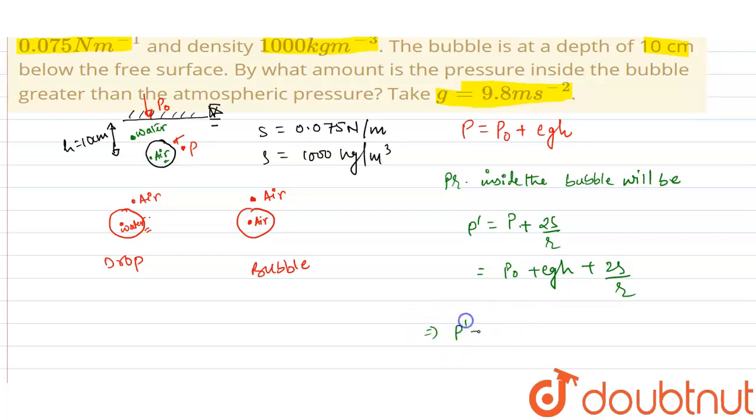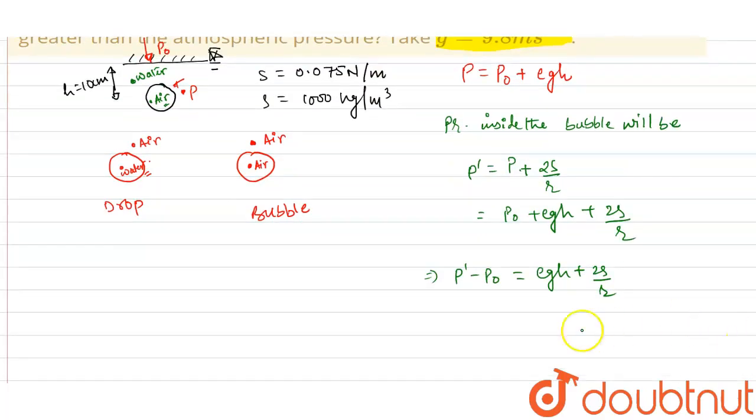Now substituting the respective values: the density is 1000, g is 9.8, height is 10 cm or 0.1 meter.